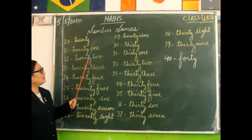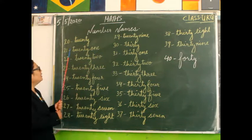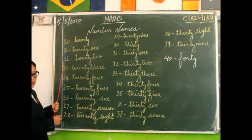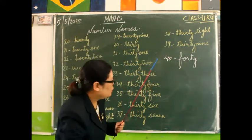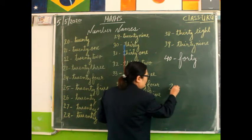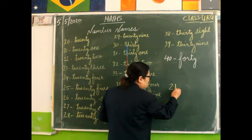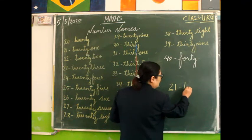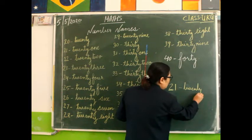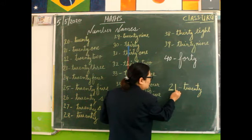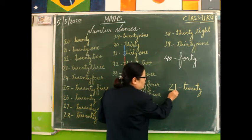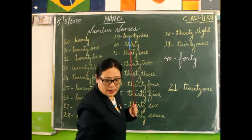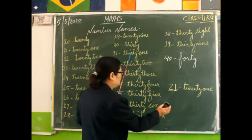Then after that, we have to write O-N-E, 1. Here it is 21. Here T-W-E-N-T-Y, 20. Then here it is 1. This 1 also you have to write here O-N-E, 1, 21. Likewise you have to write.